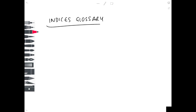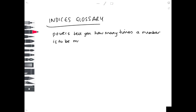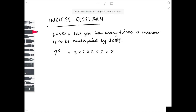We're going to have a kind of indices glossary. First of all, the word 'power' — powers tell you how many times a number is to be multiplied by itself. For example, 2 to the 5 means multiplying 2 by itself 5 times: 2×2=4, ×2=8, ×2=16, ×2=32. Note that powers and indices are the same thing.